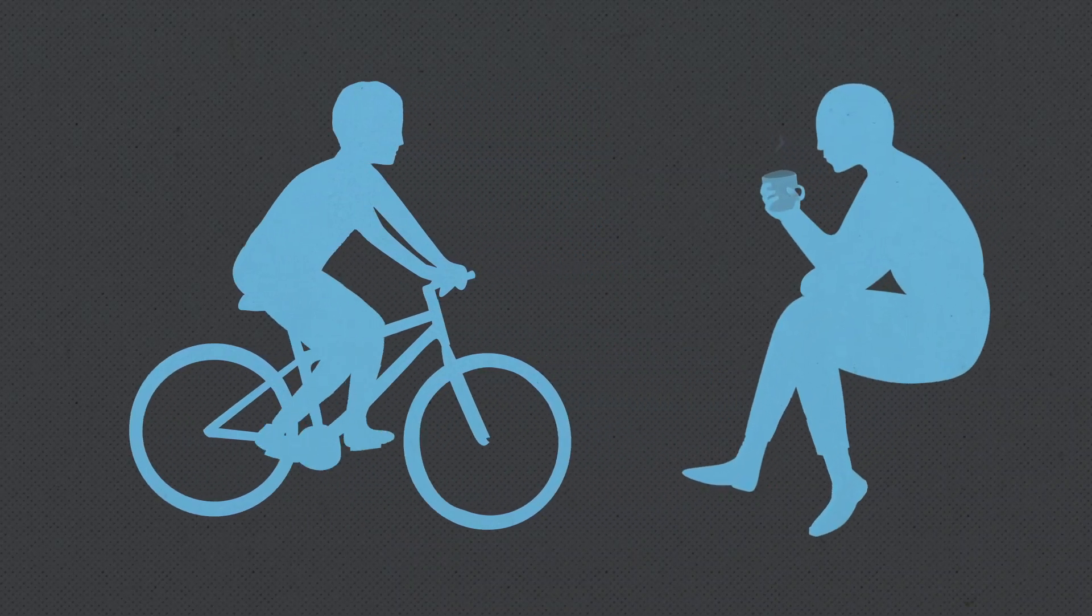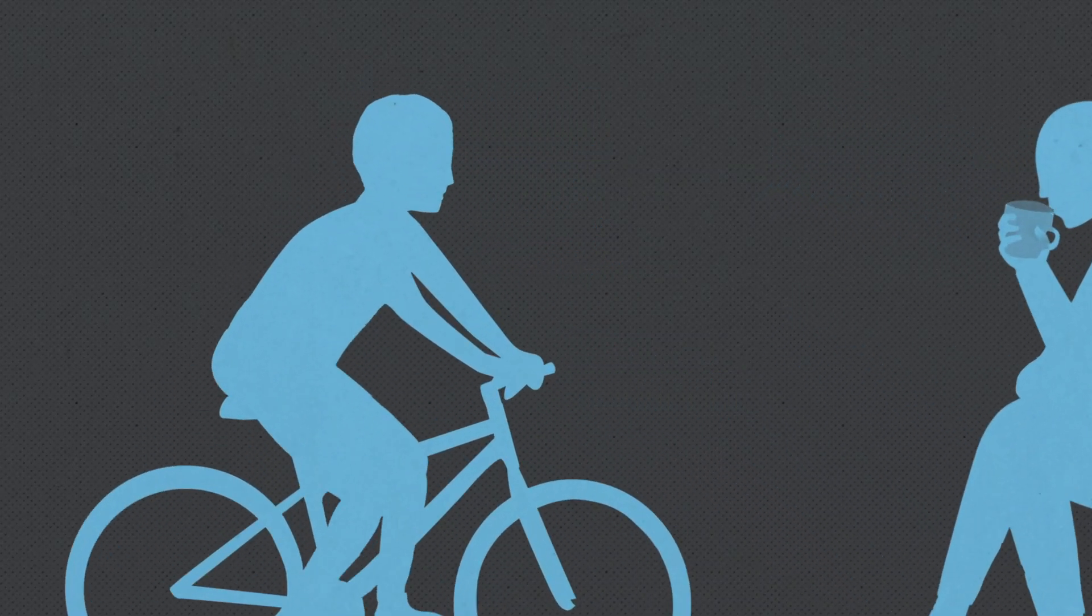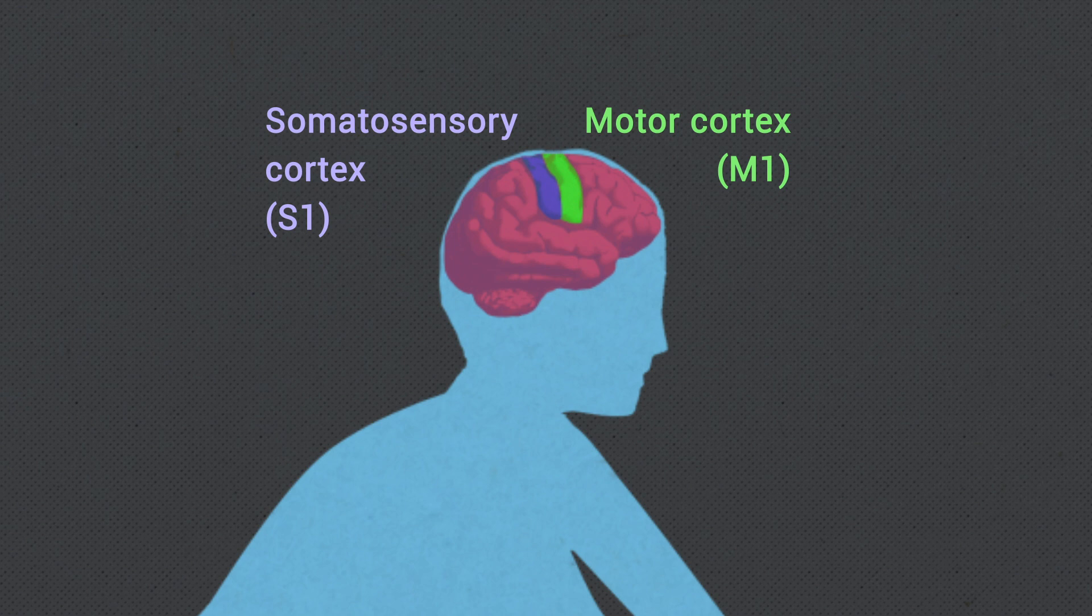From riding a bike to reaching for a cup of coffee, all skilled actions rely on precise connections between the sensory and motor areas of the brain.